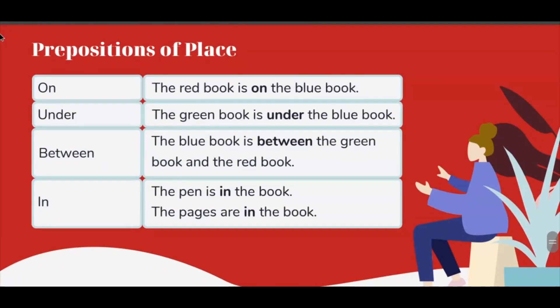Prepositions of place. On: The red book is on the blue book. Under: The green book is under the blue book. Between: The blue book is between the green book and the red book.